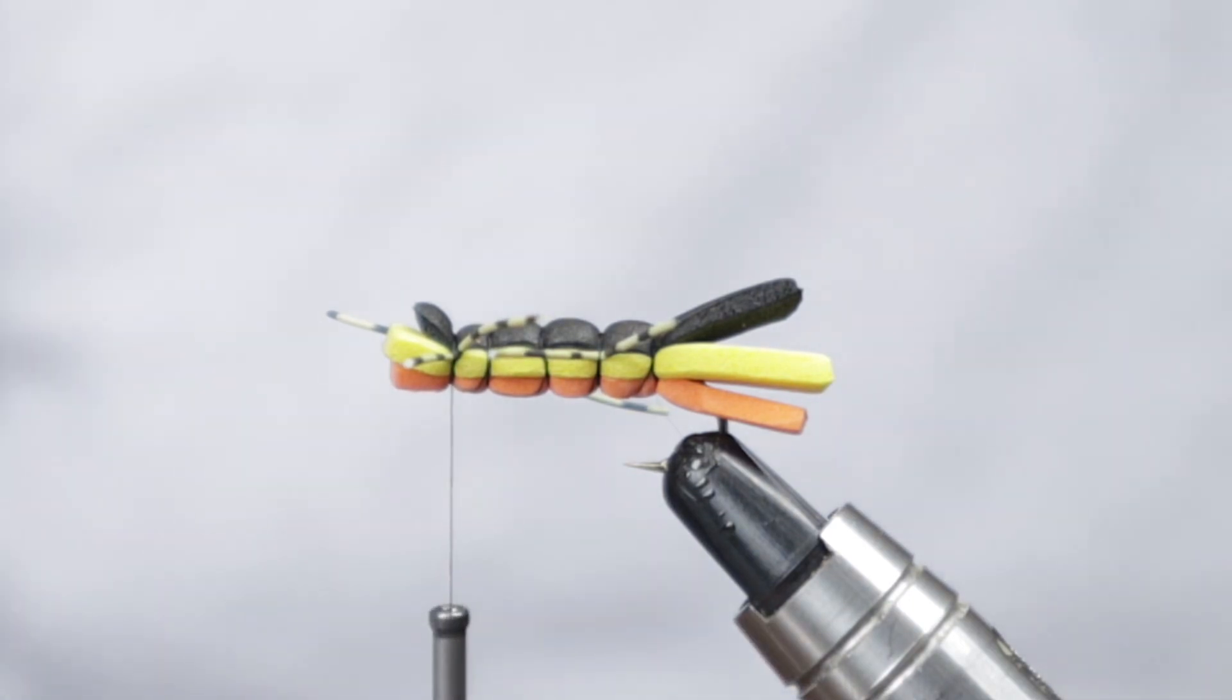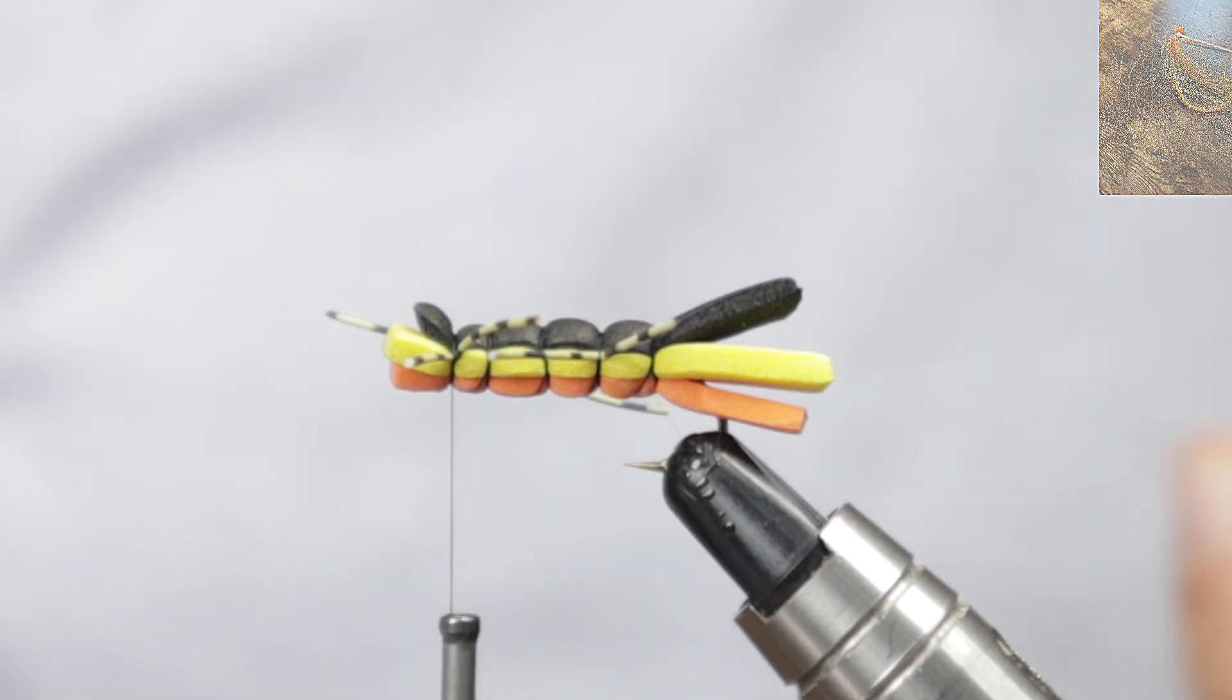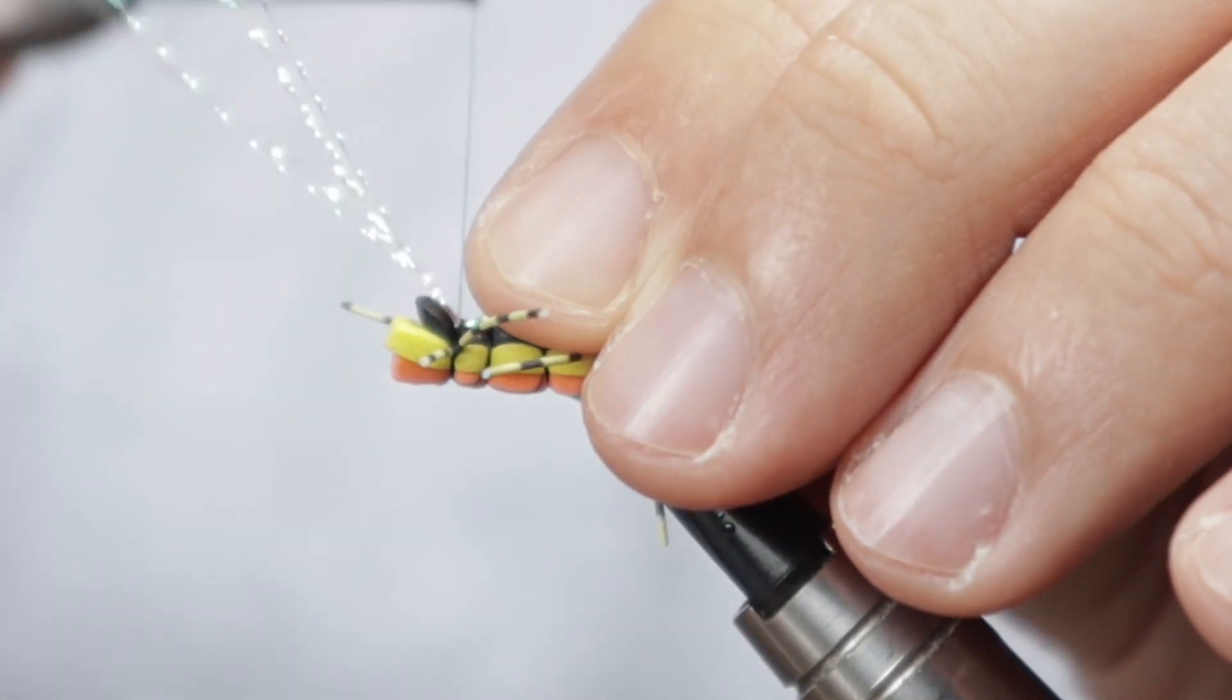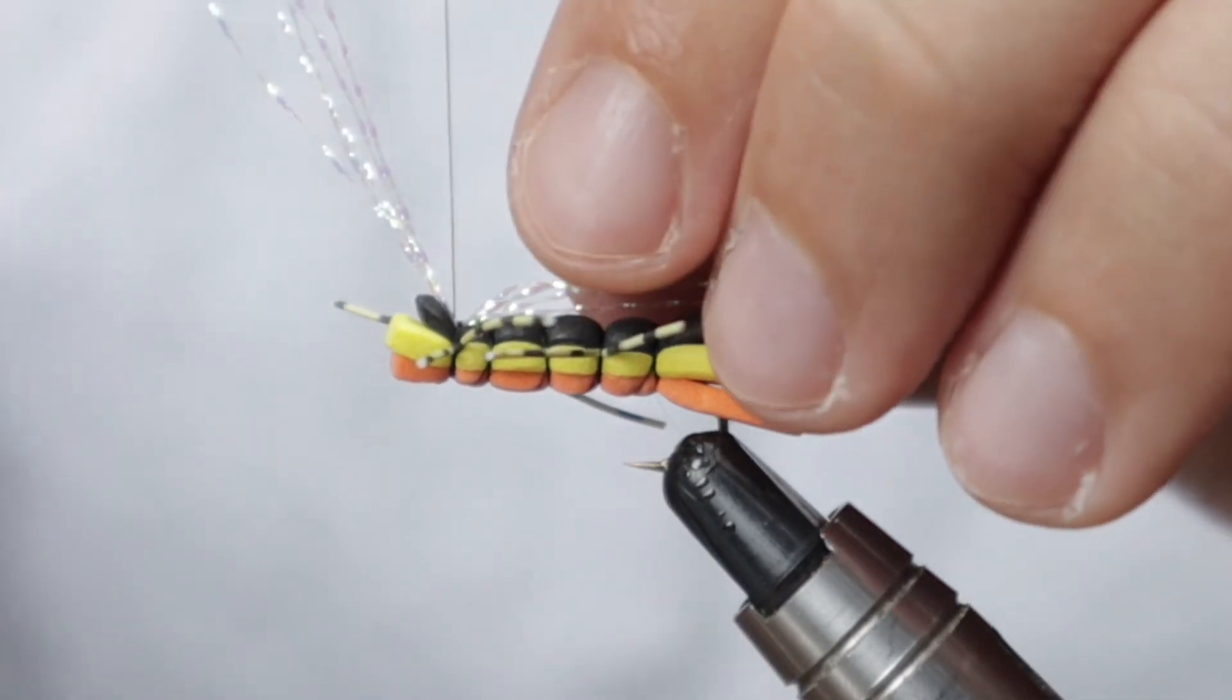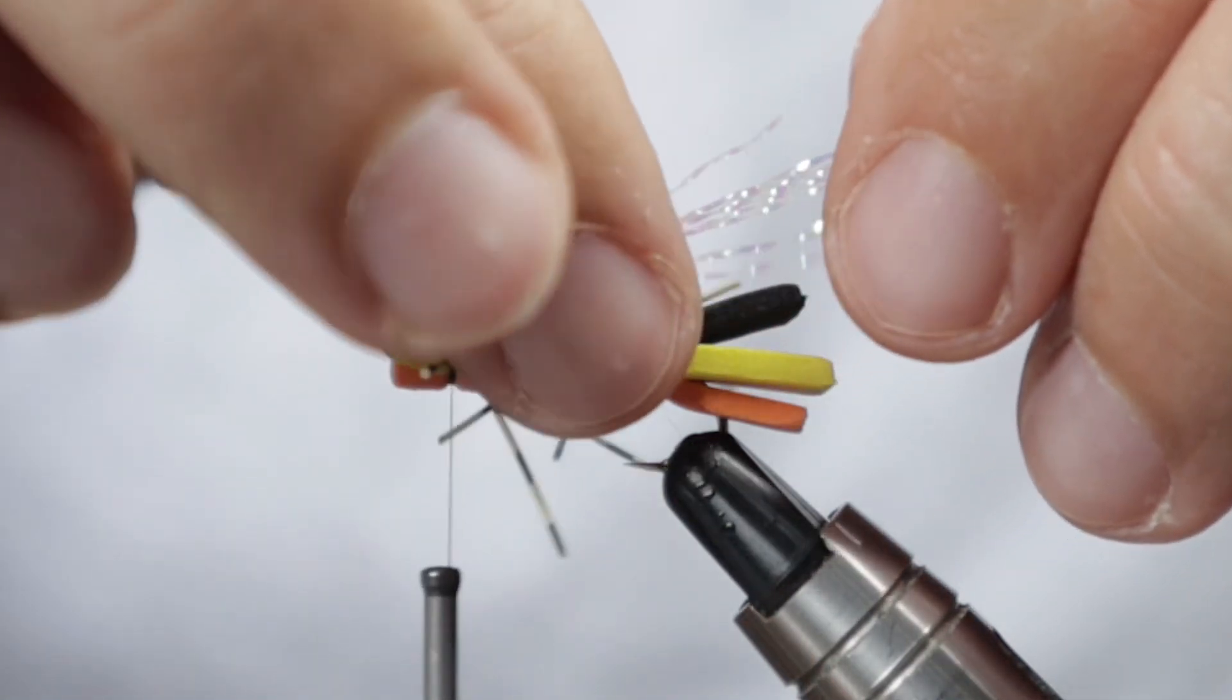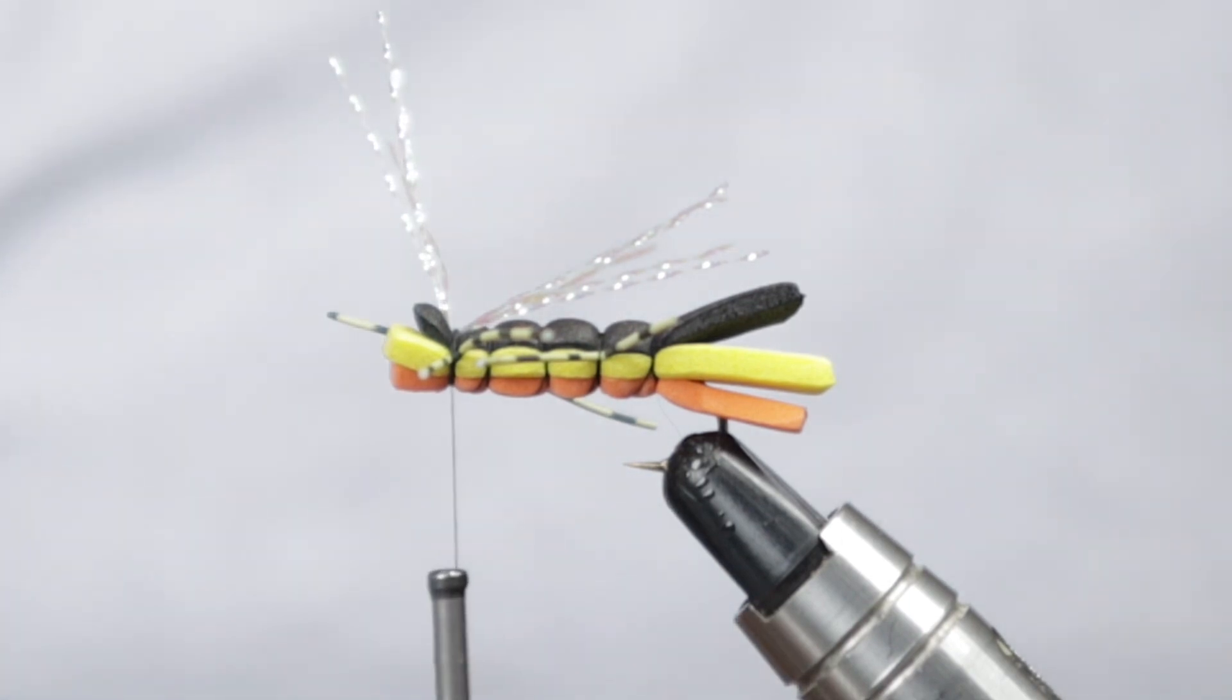Then we're also going to catch on a little bit of crystal flash. Doesn't need to be excessive, but it's just a little bit of something that might help the fish see the fly depending on what angle they're coming at it from. Just catching this on the top and folding it back. You can pick your length and trim this away. I appreciate that it's just gone everywhere but we will sort that out in a second.